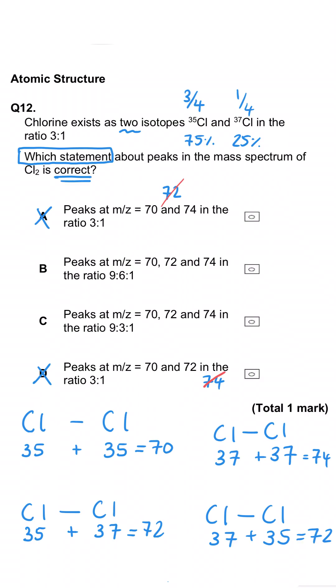We need to factor in probability here. There's a 3 out of 4 chance that this chlorine will be 35, and a 3 out of 4 chance that the other one will be. So in total, this combination has a likelihood of 9 out of 16. And for both being 37, there's a 1 out of 4 chance each, so this combination has a 1 in 16 probability.